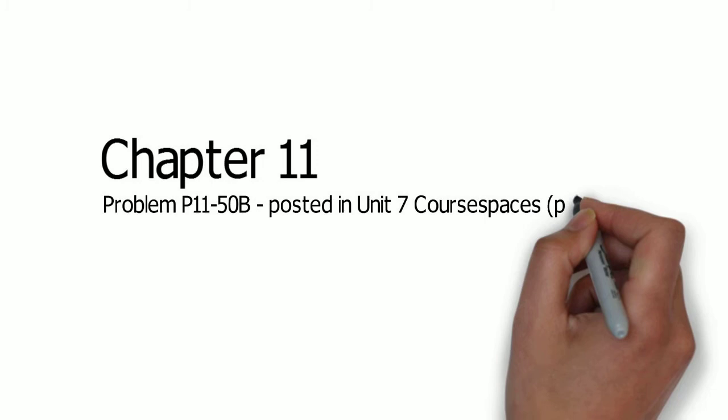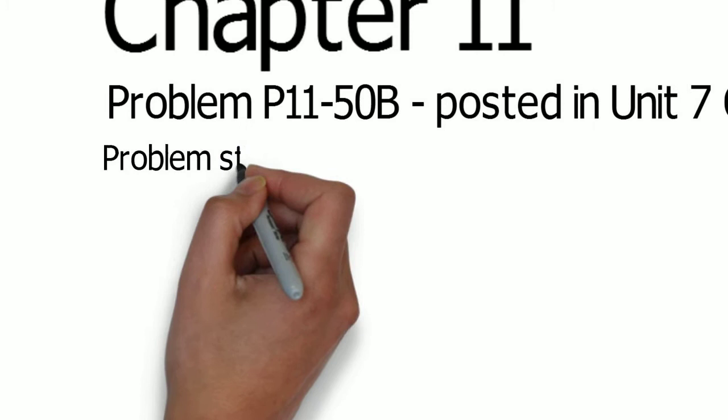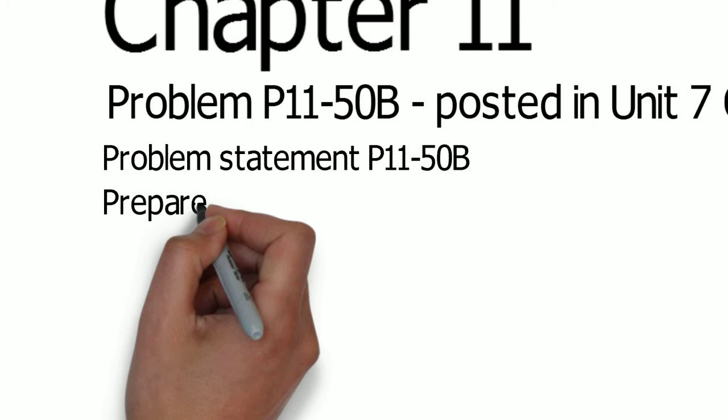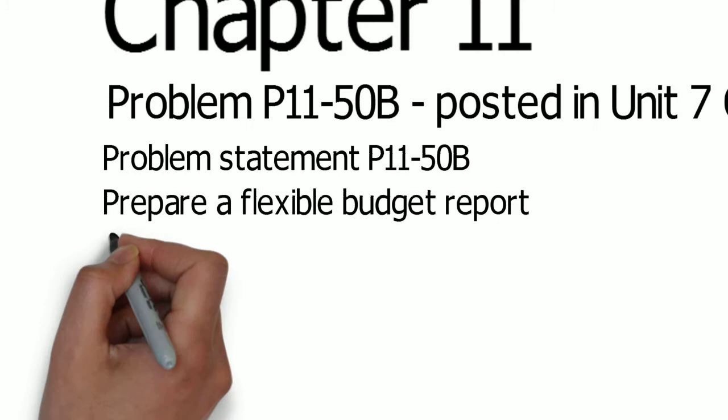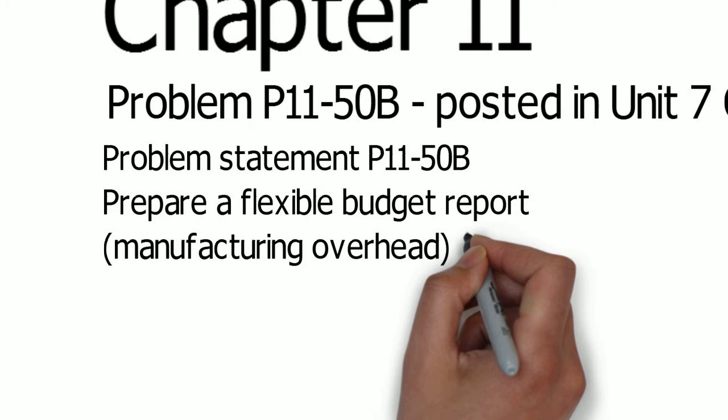In the Unit 7 section, there is a PDF file that has the problem. The folder actually has the problem statement, which is prepare a flexible budget report for the manufacturing overhead, and then there's a Word document and an Excel document with the solution. I highly recommend that you attempt the question before you watch the video. So, let's get started.